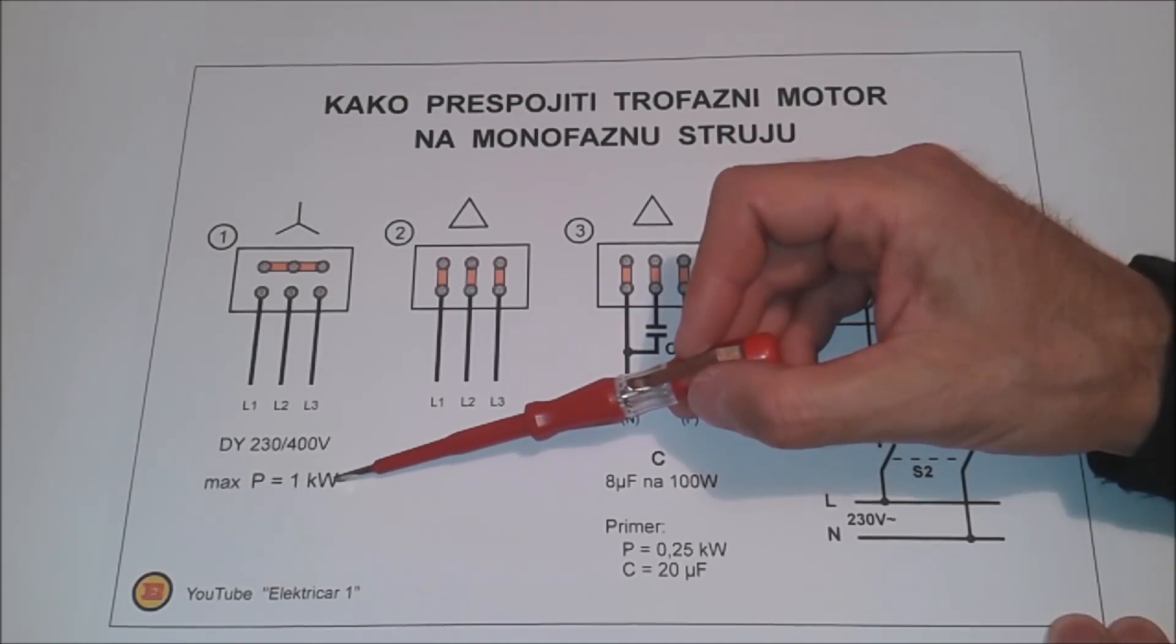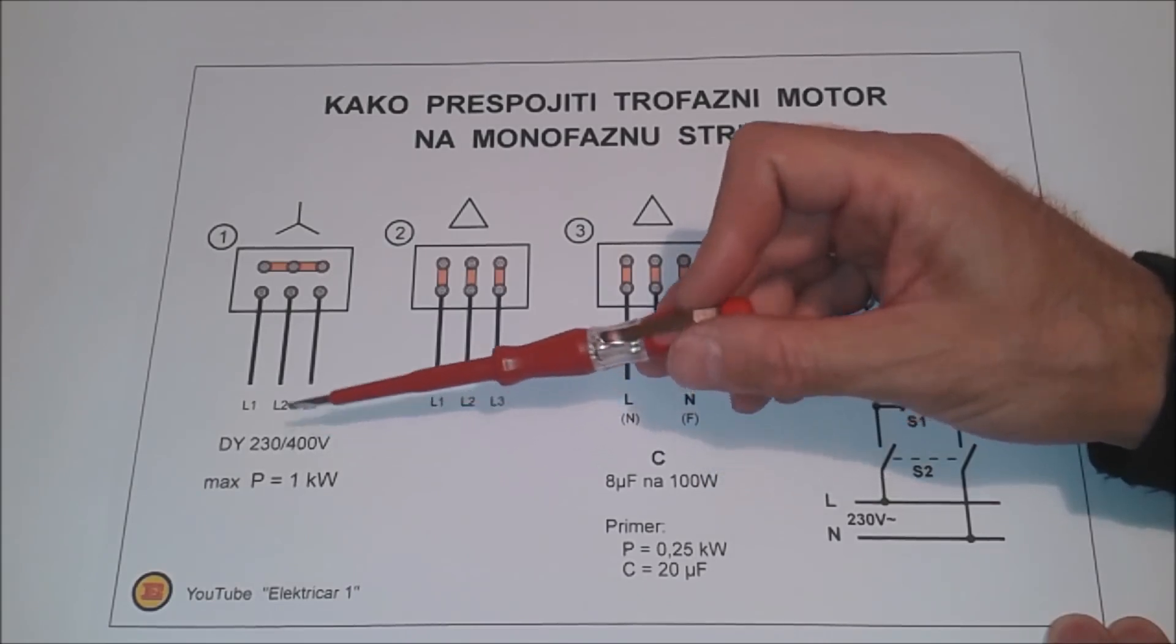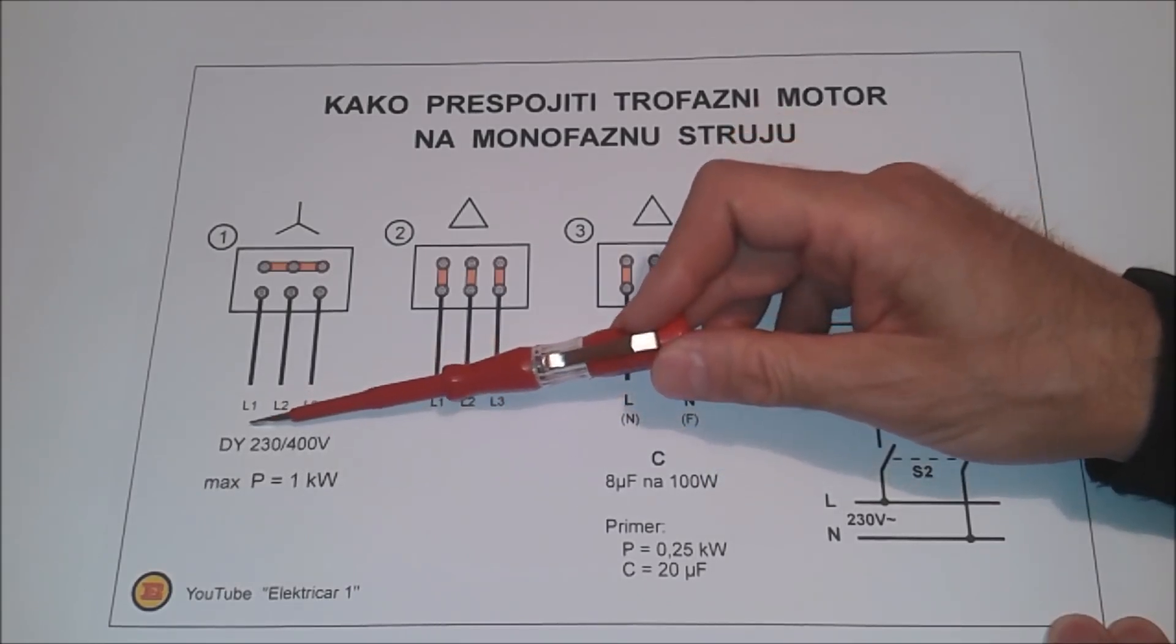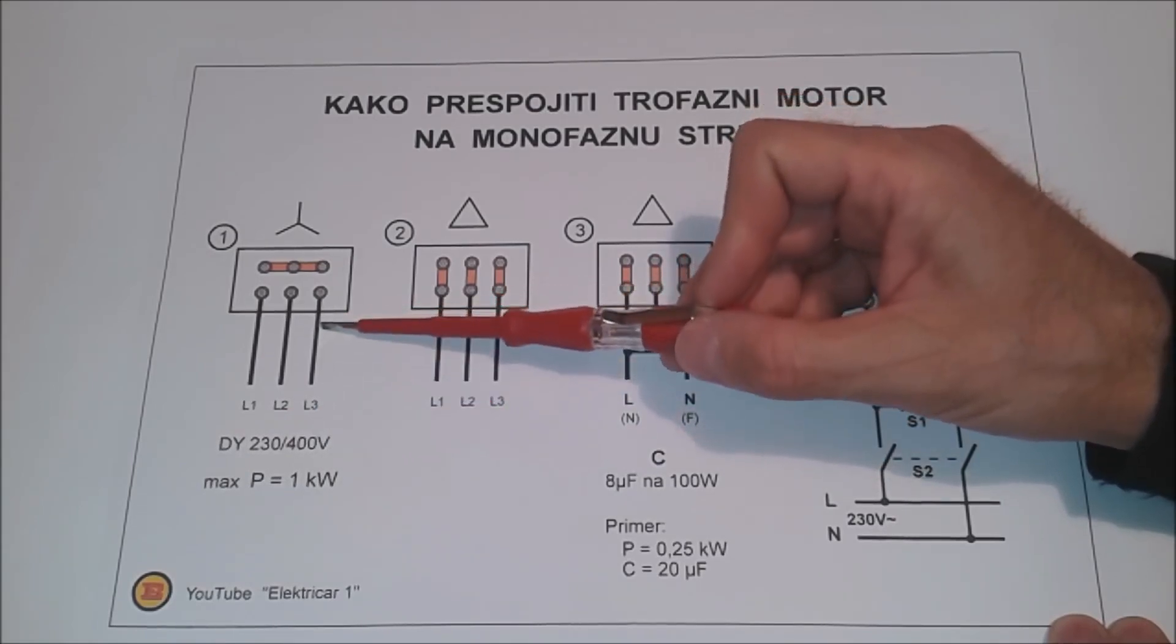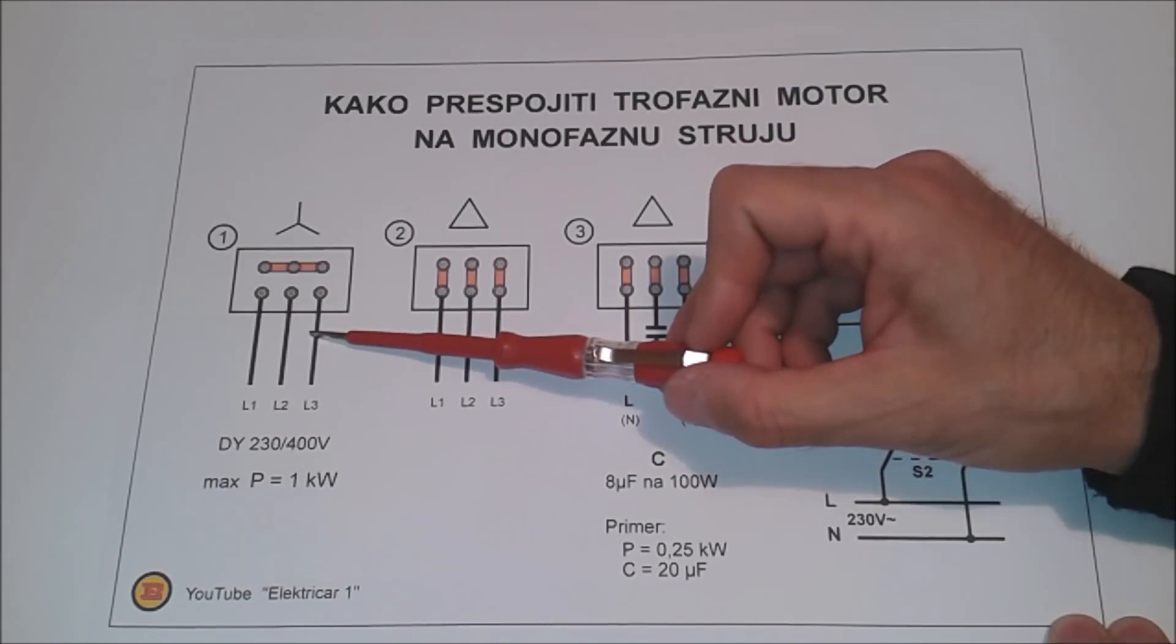When transferring, one should expect a loss of about 30% of the power. Models with name plates that read BY-230 to 400V are the only ones that can be transferred on a single-phase power supply.